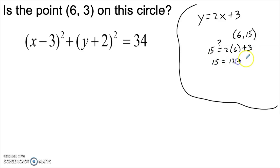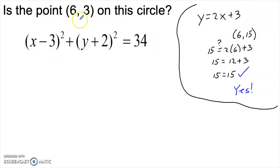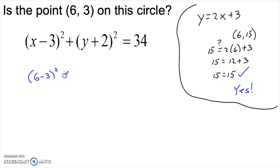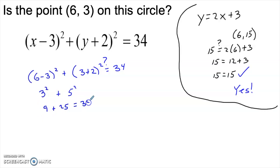We get the true statement 15 = 15, which means yes, (6, 15) is on the line y = 2x + 3. The same logic applies to the equation of a circle: if x and y make the equation work, those coordinates are a point on the circle. So is (6, 3) on the circle? Plugging in gives 9 + 25 = 34. Yes, this point is on the circle.